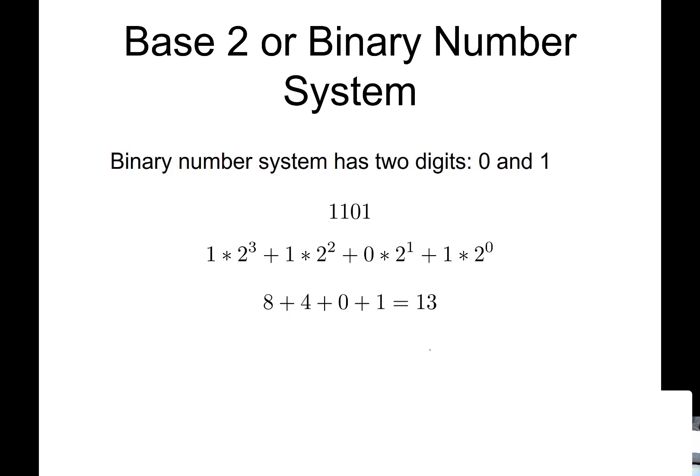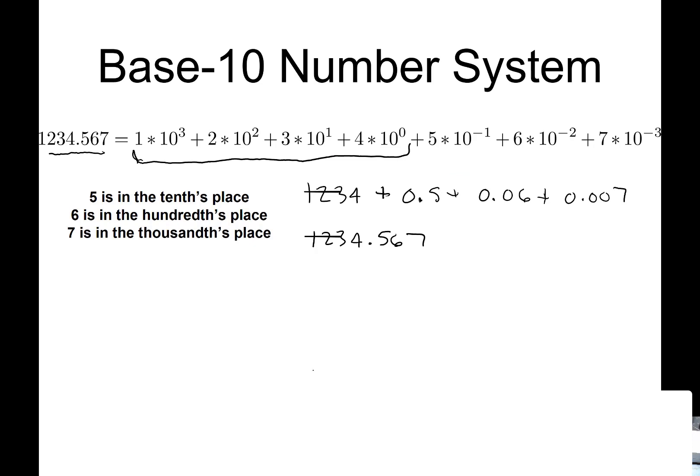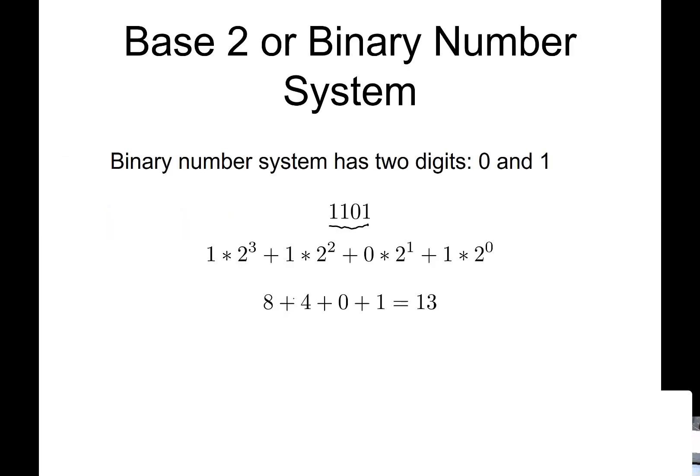So let's look at this binary number right here. So we have a 1, 1, 0, 1. So we can write this the same way that we just did with the previous number that was base 10. So remember we had the 1 in the thousandths place, so 1 times 10 to the third plus 2 times 10 squared. So we're going to do the same thing here, only now we're going to use 2 where the 10 was because we have a base-2 system instead of a base-10.